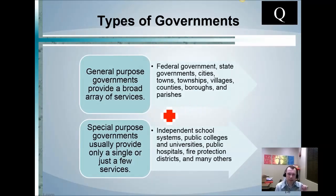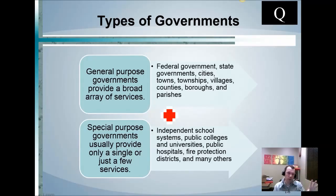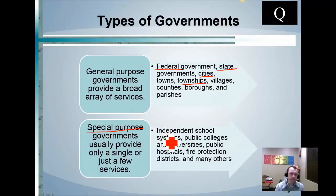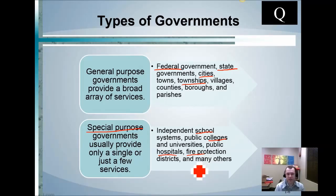There are different types of governments. The main distinguishing point is size and scope. General purpose governments — like the federal government, states, cities, and townships — cover a region and provide general services. Special purpose governments can also be geographically located but provide specific services, like school systems, colleges, hospitals, and fire protection districts.